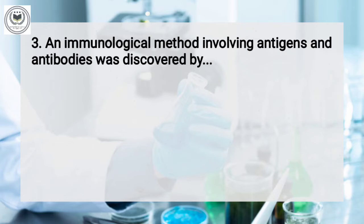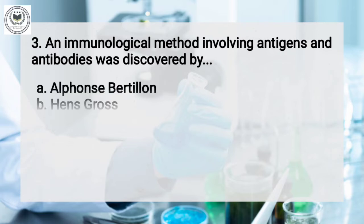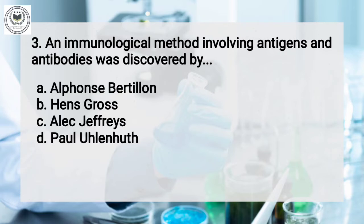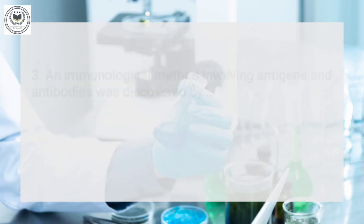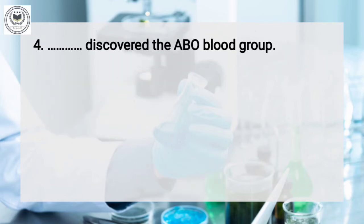The third question is: an immunological method involving antigens and antibodies was discovered by — option A: Alphanbethlin, option B: Hensgross, option C: Alec Jaflis, option D: Paul Alnath. And the answer is D, Paul Alnath.